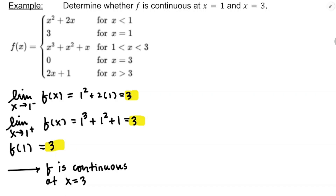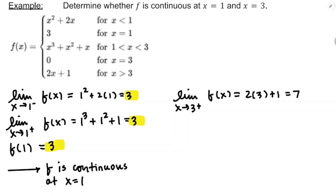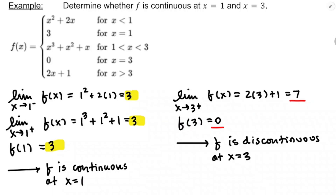For x equals 3: I notice 2x plus 1 at x equals 3 goes to 7, and the function value is 0 — those aren't the same number. If any two of these values differ, it's discontinuous. The limit from the right is 2 times 3 plus 1 equals 7, but f of 3 equals 0. The value of the function is not equal to the limit from the right, so f is discontinuous at x equals 3 — it has a jump discontinuity.